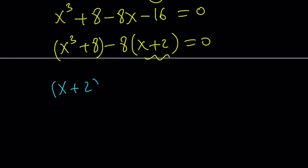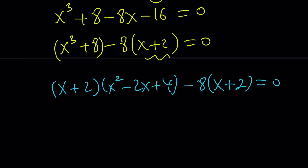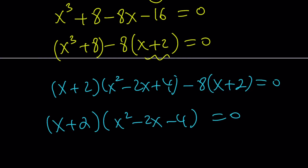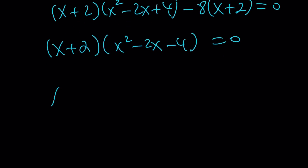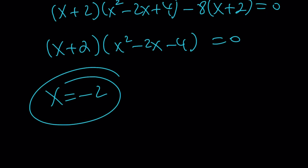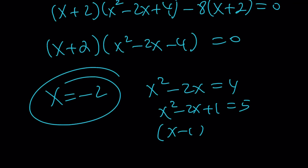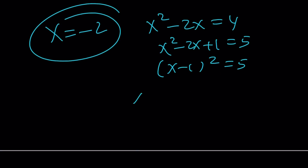Let's factor this. From the sum of two cubes — you should know this formula; if not, go ahead and memorize it, it's very helpful in algebra. And now x + 2 is a common factor. Take it out. You get x² - 2x + 4 - 8, which is x² - 2x - 4. So x = -2 is a solution, and the other factor gives x² - 2x = 4. Add 1 to both sides, and you get (x - 1)² = 5, which means x - 1 = ±√5, so x = 1 ± √5.